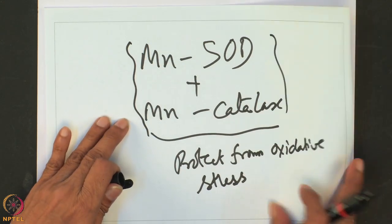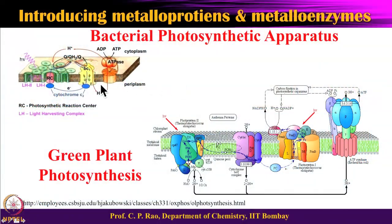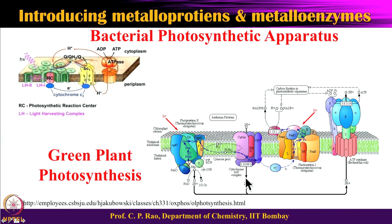Together, manganese SOD and manganese catalase protect cells from oxidative stress. SOD dismutates superoxide to O2 and H2O2; catalase then converts H2O2 to water and O2. The next enzyme in the manganese series is the bacterial photosynthetic apparatus — a very large system. We are interested specifically in the oxygen-evolving region where the tetranuclear manganese cluster is involved, which falls under photosystem II.